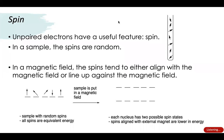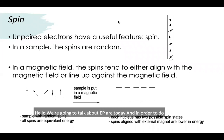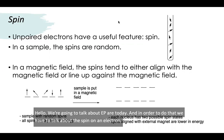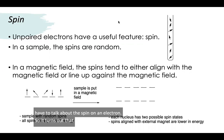Hello, we're going to talk about EPR today, and in order to do that we have to talk about the spin on an electron. It turns out that electrons have a useful feature: spin, and it's a quantum theory feature of both the nucleus and of an electron.